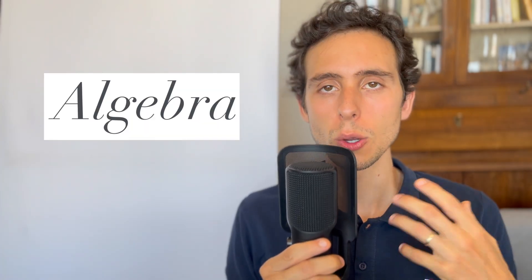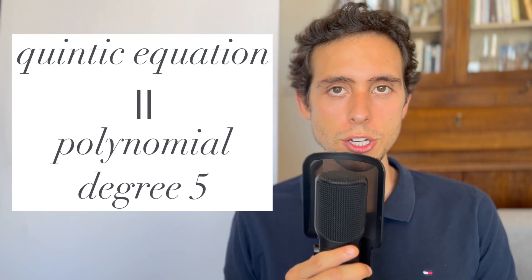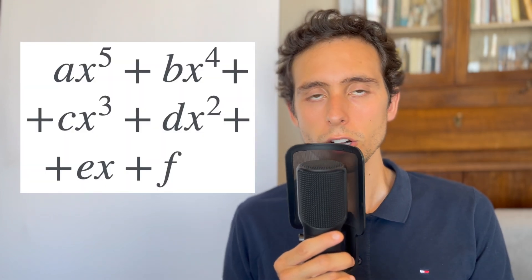Today, we'll delve into the world of algebra to explore quintic equations. An equation involving powers of a variable is called a polynomial equation. A quintic equation is a polynomial equation with degree 5. This way, its general form looks like that. A through F are constants, such that A is different than 0.